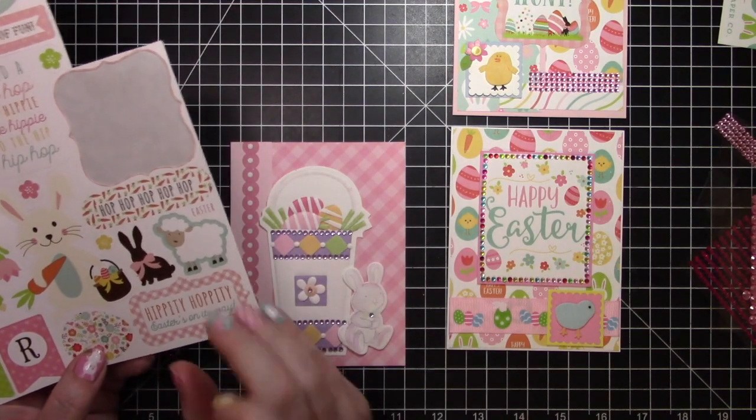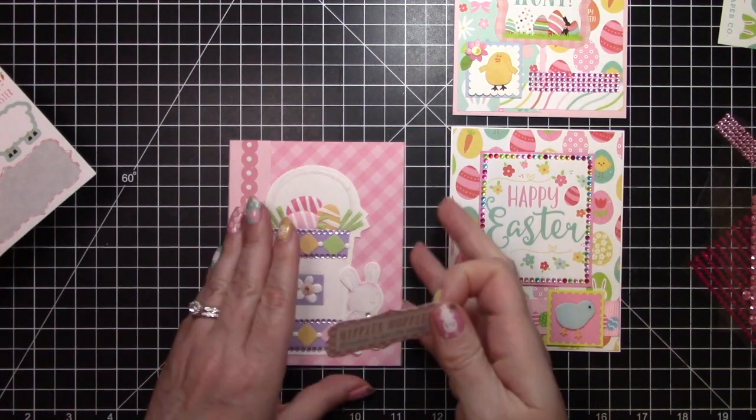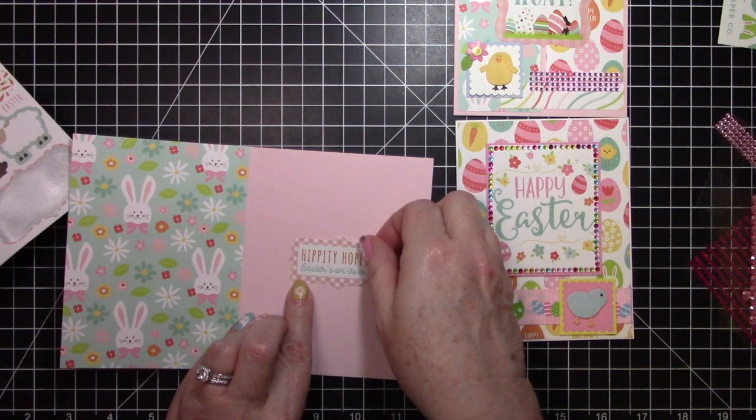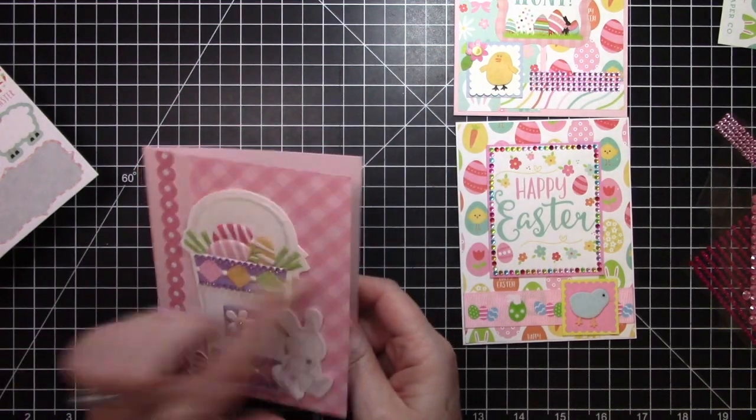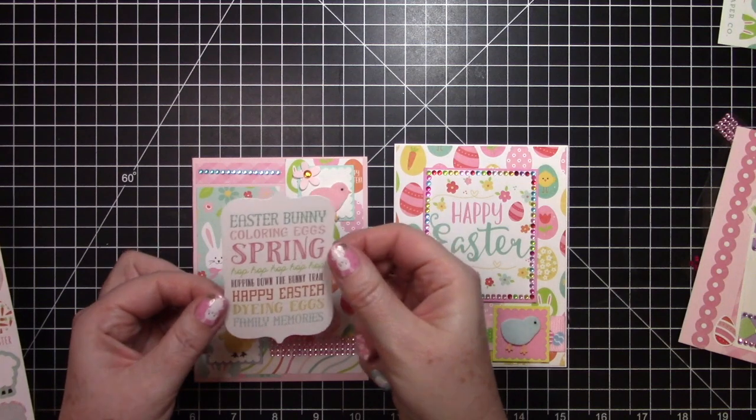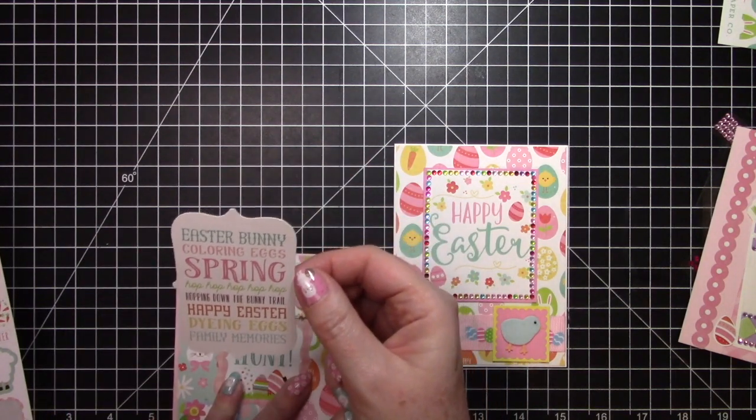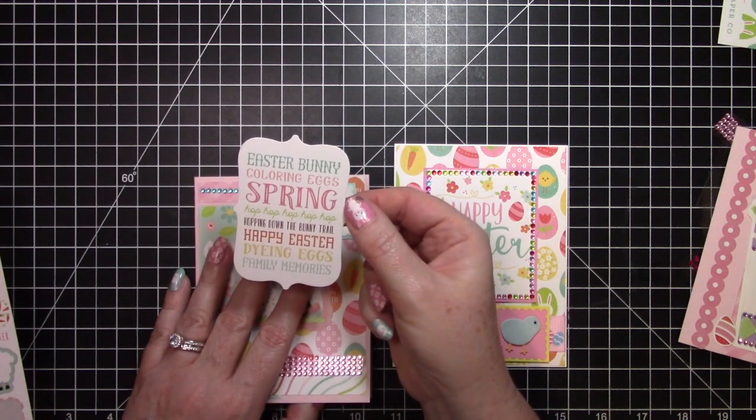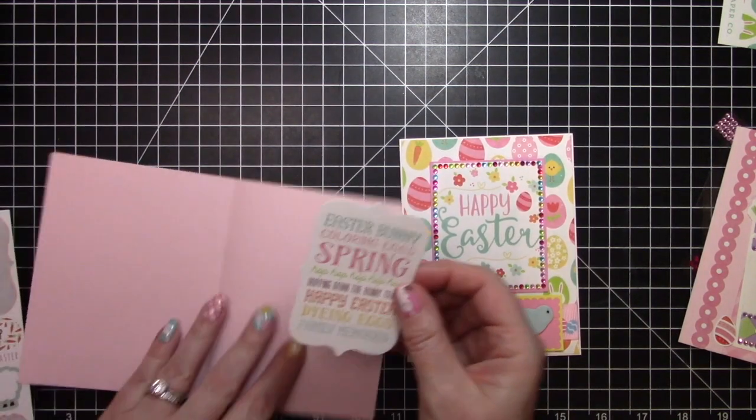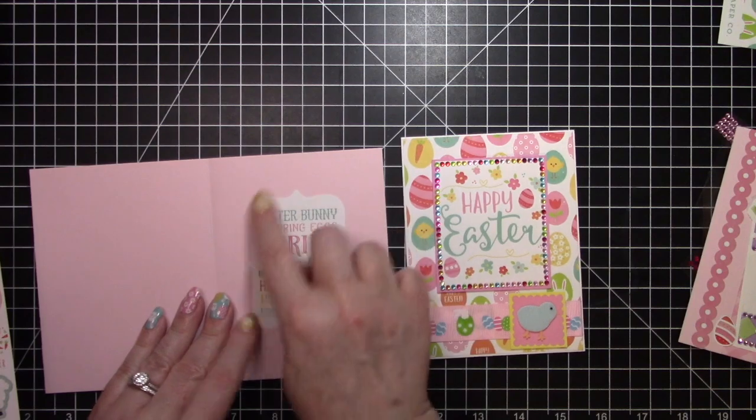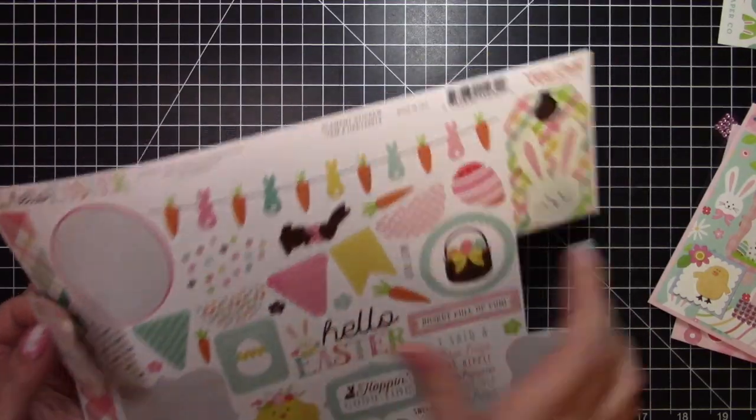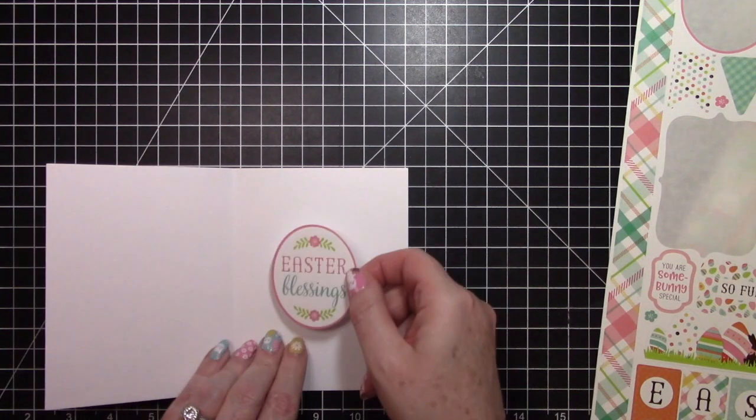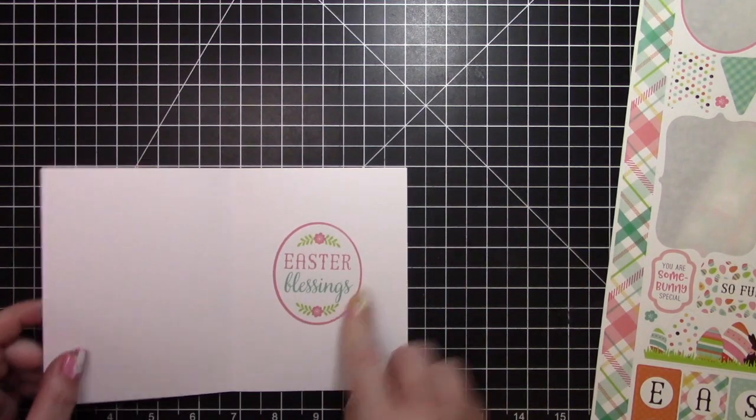And then for the insides I'm going to use some of these stickers. This one I'm going to use this hippity hoppity Easter's on its way. I'm just going to put that right there as my sentiment since it does match the paper on the front. This sticker here, Easter bunny coloring eggs hop hop hop, and hopping down the bunny trail, happy Easter, dying eggs, family memories. I'm just going to put that on the inside of this card. And this one I'm going to put Easter blessings on the inside of this. I think it goes really good and it has an outline of pink so I don't have to mat it on anything.